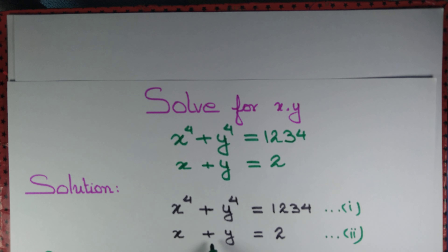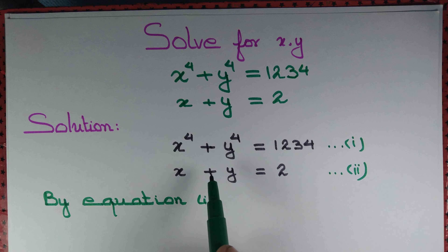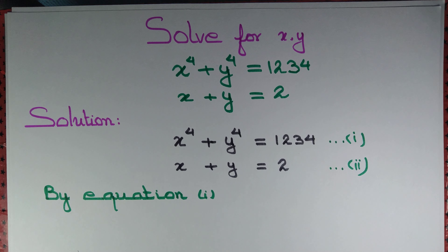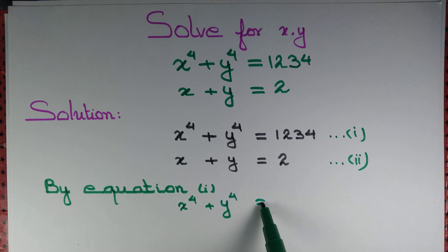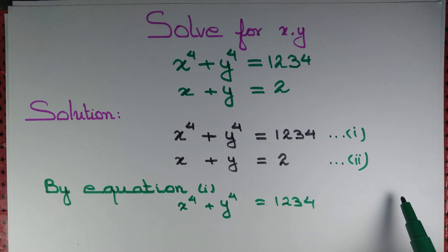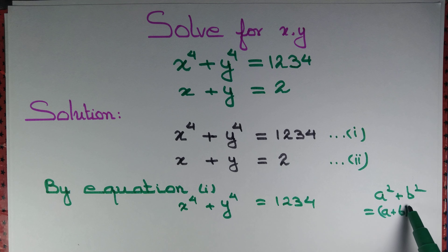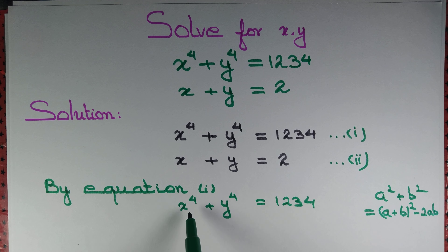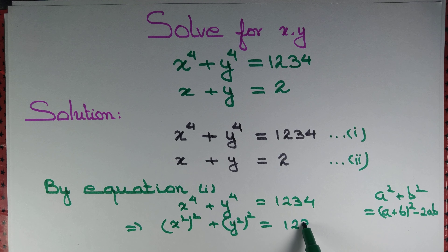We try to express x⁴ + y⁴ in terms of x + y, and we are given x + y = 2. From equation 1, x⁴ + y⁴ = 1234. We note that x⁴ can be written as (x²)² and y⁴ can be written as (y²)², so (x²)² + (y²)² = 1234.